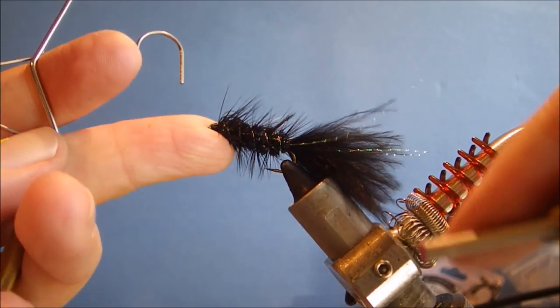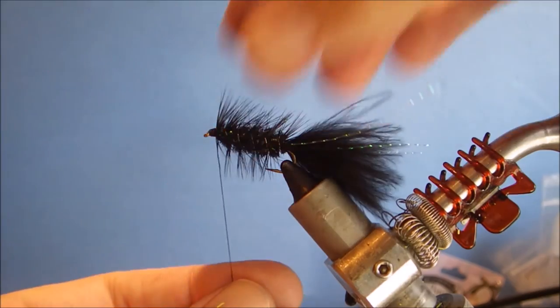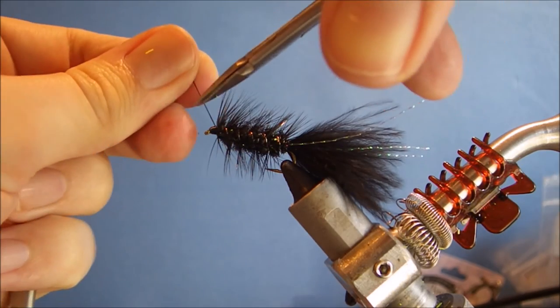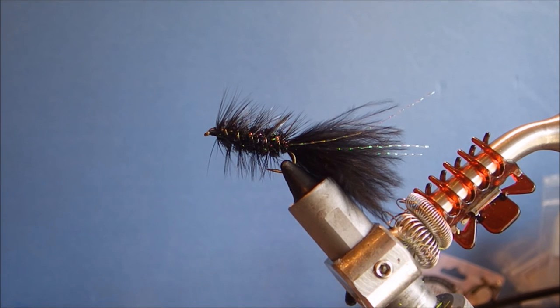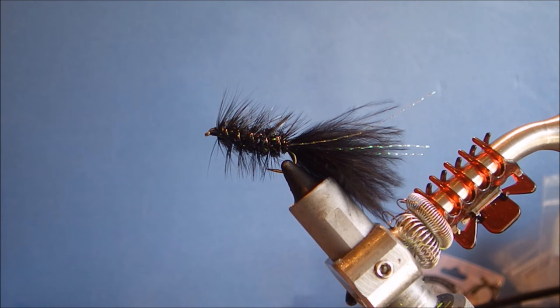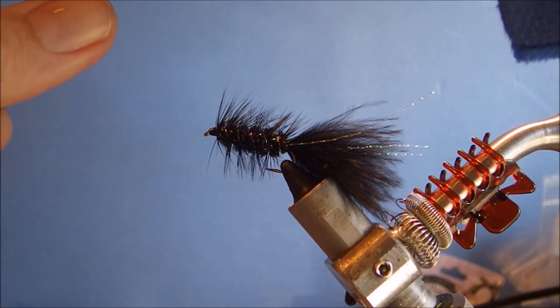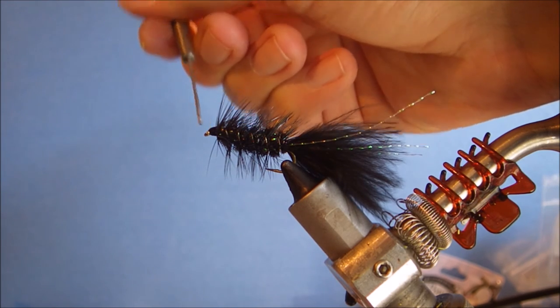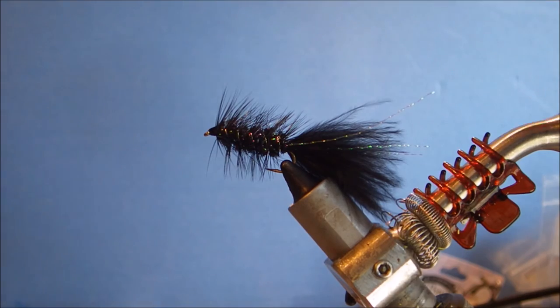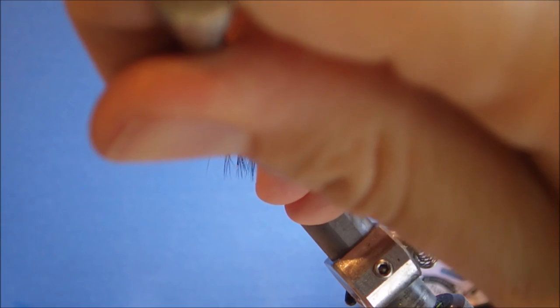Four or five turns to finish. And that's your woolly bugger, the only thing left to do is put a bit of head cement on, or hard as nails or whatever it is that you like to use. You can give it a couple of coats if you like a nice shiny head, but for fishing purposes, one's enough.